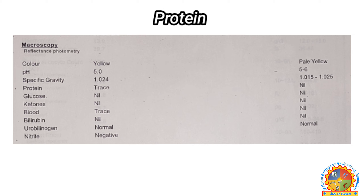Next, protein. Protein is usually not found in urine samples. If there are some traces of protein at a higher level, it indicates the kidney is not working properly.